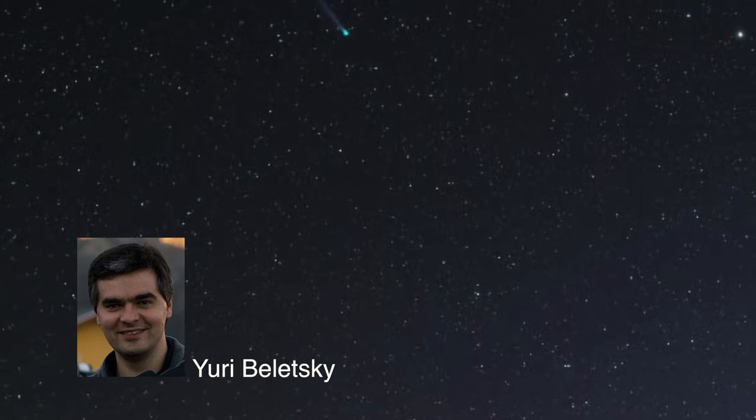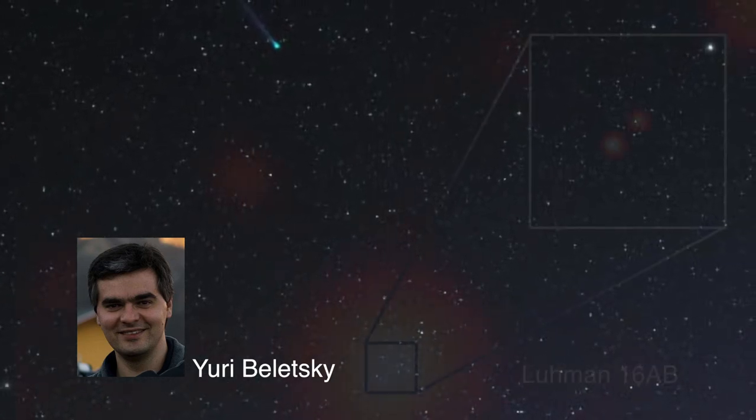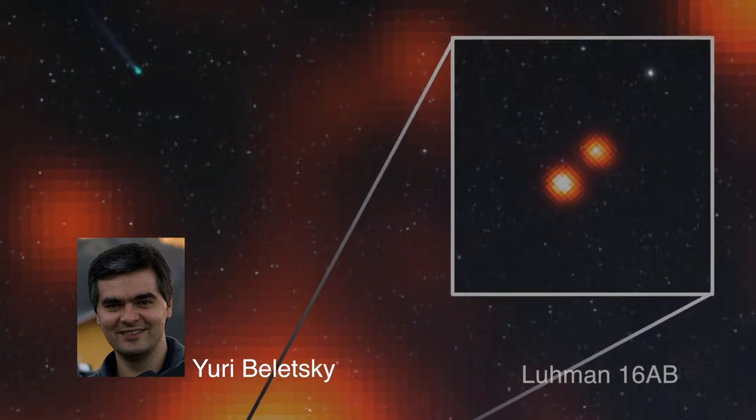Astronomers, including Carnegie's Yuri Beletsky, took precise measurements of the closest pair of failed stars to the Sun, which suggests that the system harbors a third planetary mass object.